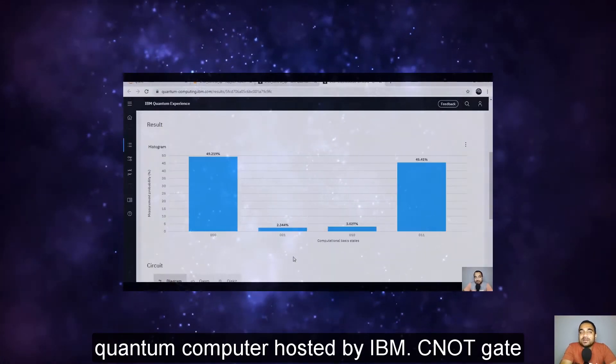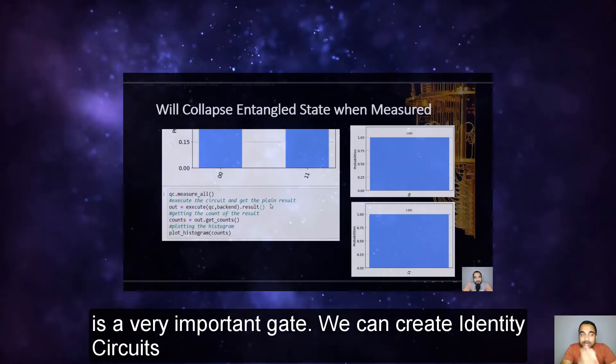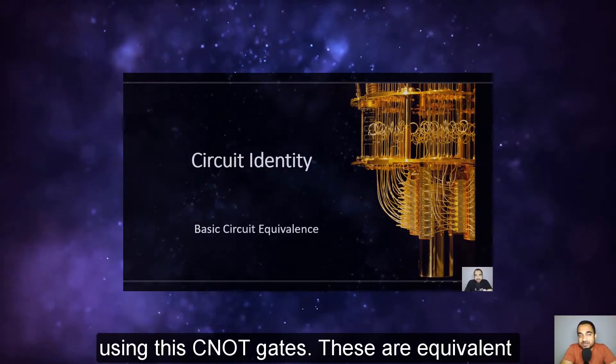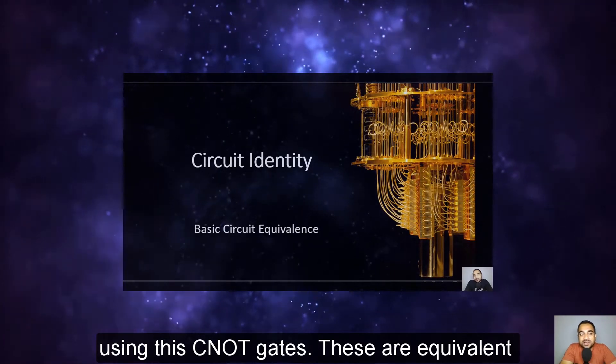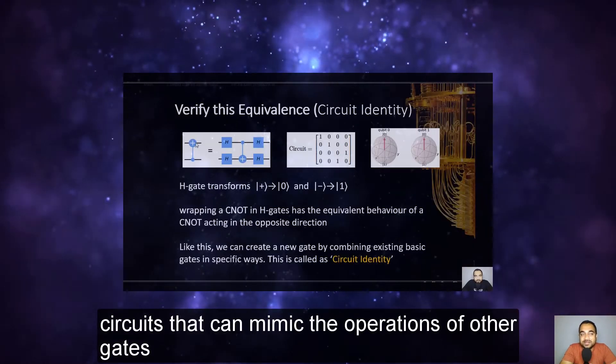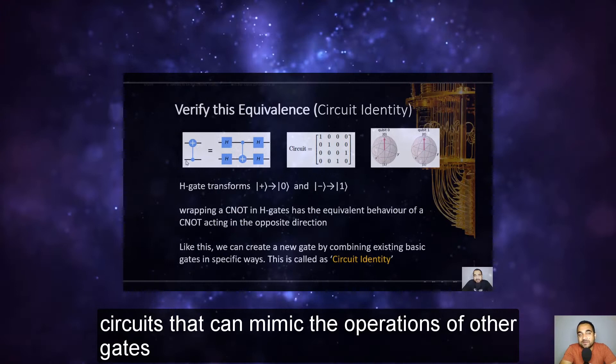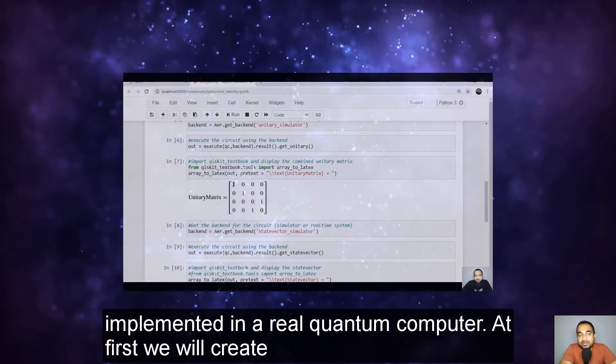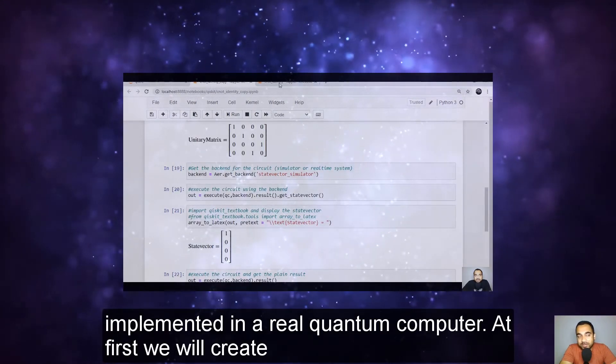And like other previous gates we will also proceed with implementing the CNOT gate in a real quantum computer hosted by IBM. CNOT gate is a very important gate. We can create identity circuits using these CNOT gates. These are equivalent circuits that can mimic the operations of other gates which are just theoretical gates that cannot be implemented in a real quantum computer.